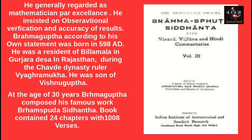Brahmagupta insisted on observational verification and accuracy of results. According to his own statement, he was born in 598 AD and was a resident of Villamala in Gurjara Desha, Rajasthan, India, during the Chapa dynasty ruler Vyaghramukha. He was a son of Vishnu Gupta, another famous mathematician. At the age of 30, Brahmagupta composed his famous work, the Brahmasphutasiddhanta, a book containing 24 chapters with 1008 verses.